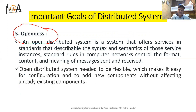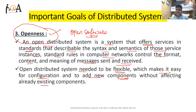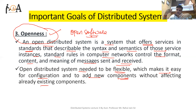The next important goal is openness. An open distributed system is a system that offers services and standards that describe the syntax and semantics of those services. Standard rules in computer networks control the format, content, and meaning of messages sent and received. Openness means open software — if anyone wants to contribute to its upgradation, the system must be flexible, making it easy to add new components without affecting already existing components.